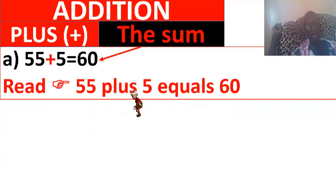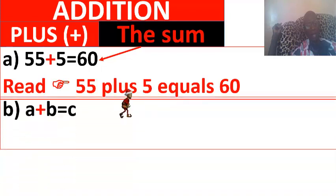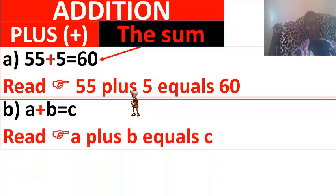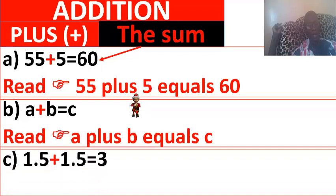B: A plus B equals C. A plus B equals C. C: 1.5 plus 1.5 equals 3. In English, 1.5 plus 1.5 equals 3.